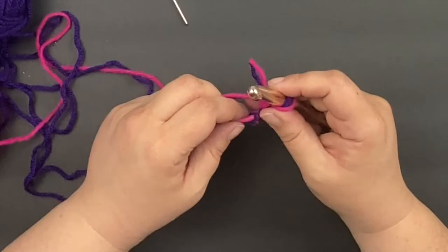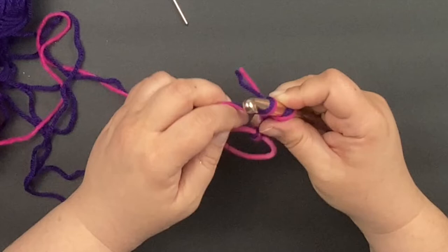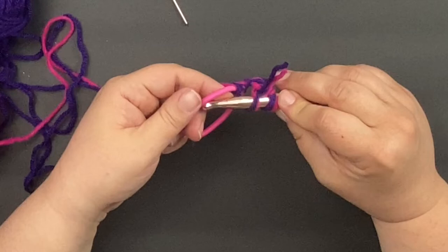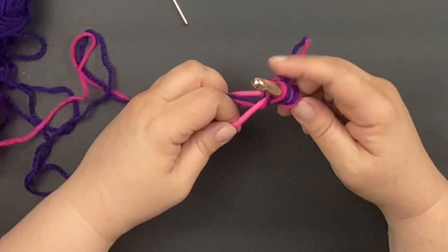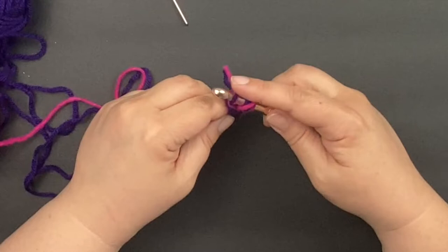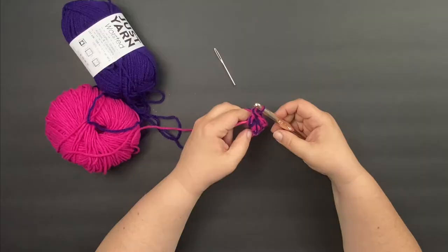We'll start double crocheting by yarning over. Insert our hook into the hair tie. I'm going to grab the yarn from behind and we're going to pull it up and then yarn over our hook again, pull through two. Yarn over our hook again, pull through two. Now we'll continue to double crochet all the way around our hair tie.